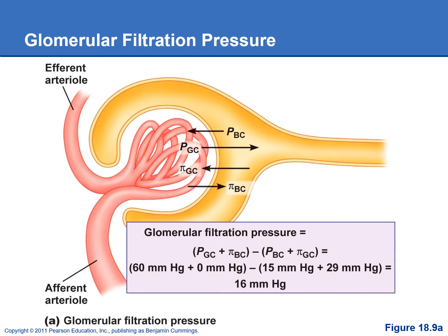There are a number of forces that affect glomerular filtration. One is the high blood pressure in the glomerulus — 60 millimeters of mercury. The reason blood pressure is so high there is because the efferent arteriole has a more narrow diameter than the afferent arteriole coming in. Because less blood can exit than what's coming in, blood backs up into the glomerulus, increasing blood pressure up to 60 mmHg.